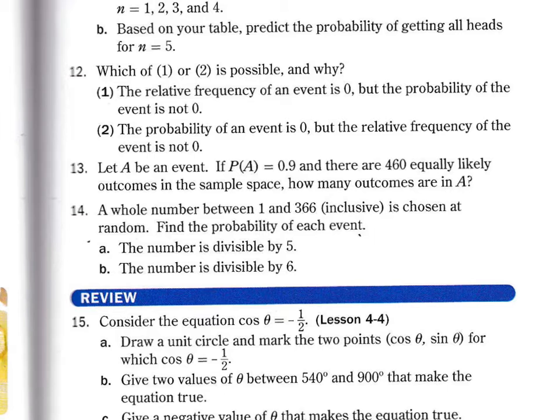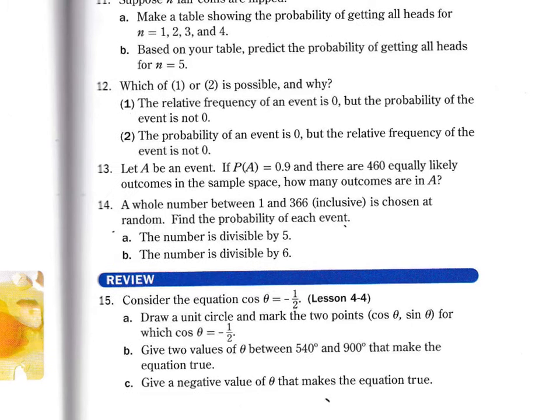Hello Algebrites. Let's take a look at number 13. So number 13: let A be an event. If the probability of A is 90% or 0.9 and there are 460 equally likely outcomes in the sample space...